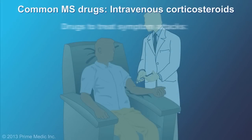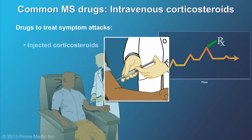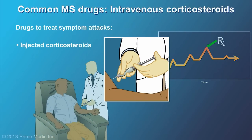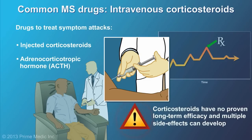Drugs used to treat acute attacks are believed to help shorten the length and severity of the attack. The most commonly used are intravenous corticosteroids. Adrenocorticotropic hormone, or ACTH, is another option to treat acute attacks. Corticosteroids are not considered long-term solutions, as they have no proven long-term efficacy and because of the multiple side effects that can develop.